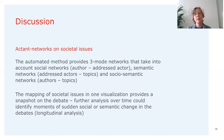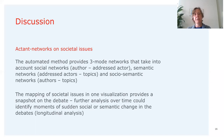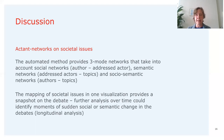In discussion, these are a type of actant networks of societal issues. This automated method provides three-mode remote network visualizations, but one could also analyze only the social networks of authors addressing other actors, or only the usernames and hashtags — the addressed actors and topics — or social-semantic networks of authors using specific hashtags. One could also code the addressed actors into stakeholder categories, which might allow inclusion of more hashtags and usernames in the visualizations while keeping them readable.